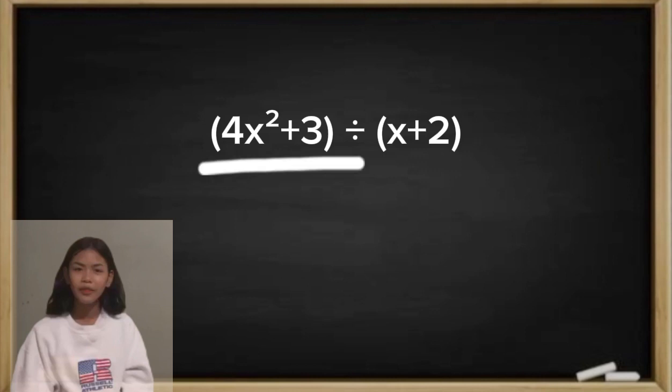Tama, ito ay hindi pa nakaayos sapagkat sa long division, kailangan nakaayos ang ating dividend from the higher to the lower exponent. So our dividend will be 4x squared plus 0x plus 3.